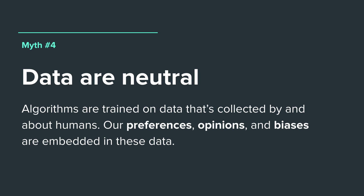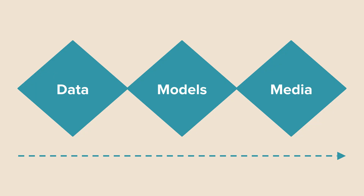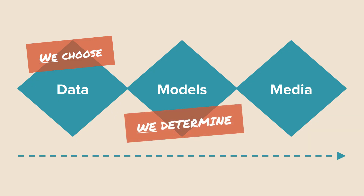There's sometimes this fantasy that if we apply AI to a system, it will actually remove a bunch of the problems with human judgment or human errors. The problem with that though is algorithms are trained on data that's collected by and about humans. They have in them our preferences, our opinions, and our biases are embedded into this data. We choose where all the data come from, we get to choose what good looks like, and we determine those success criteria and what truth is.